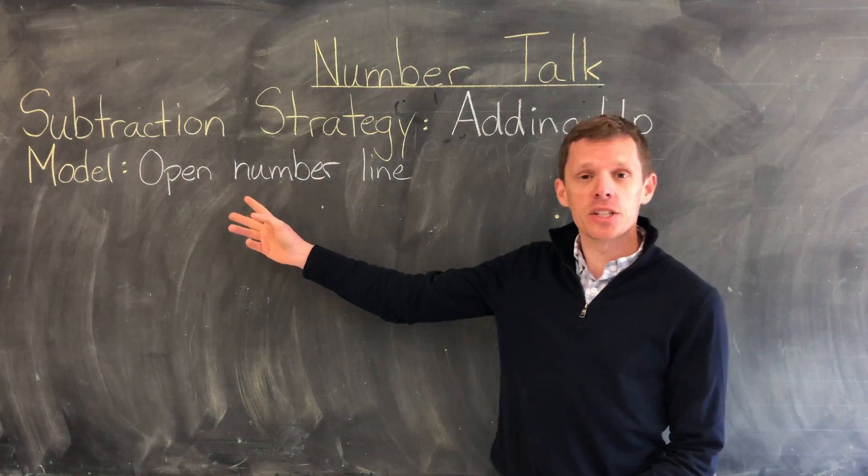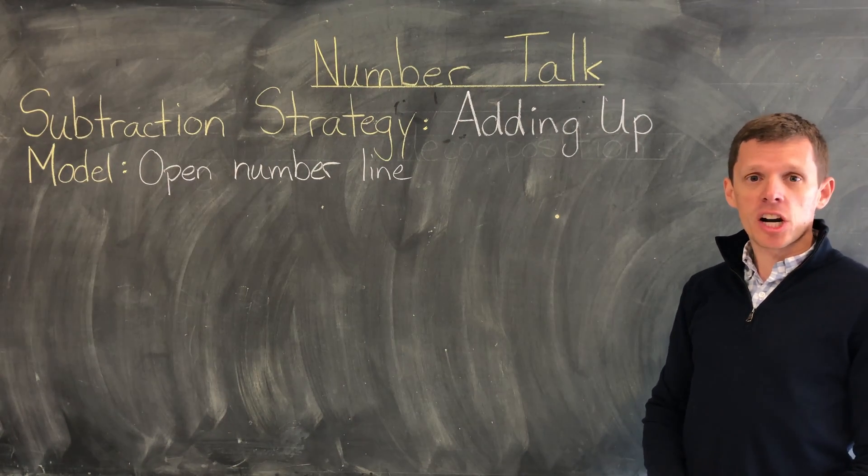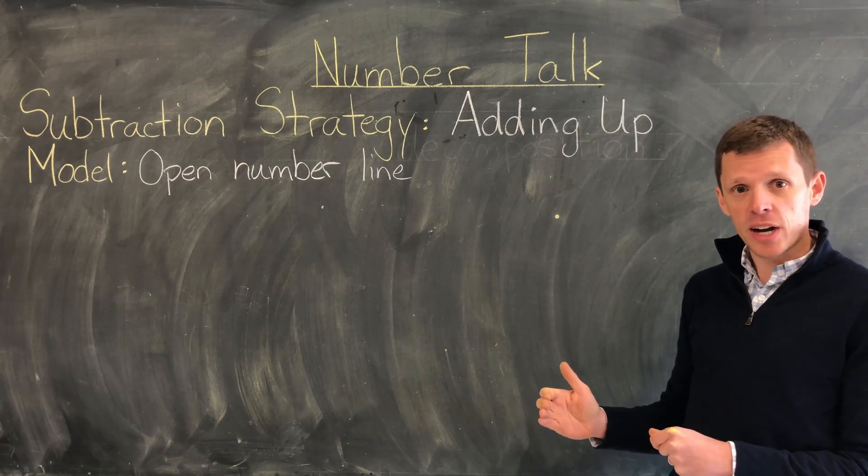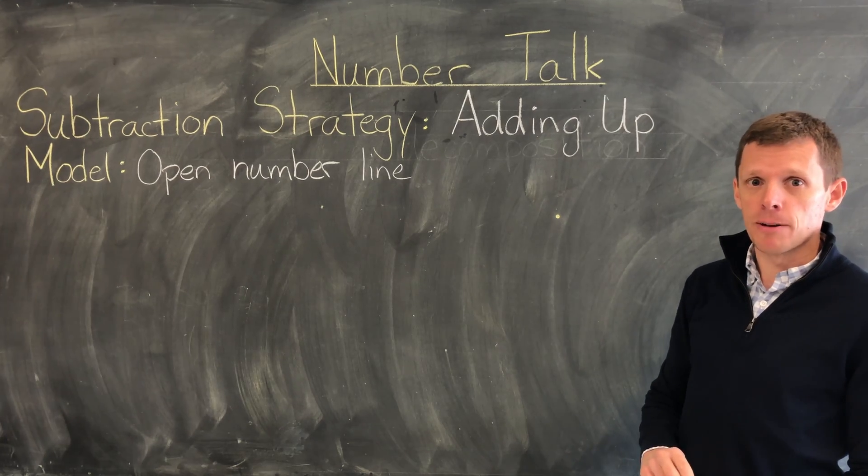Our model for today is going to be an open number line. The strategy of adding up allows us to start with the subtrahend, which is the number that is being subtracted, and add up to the minuend, which is the whole number that we're subtracting from.